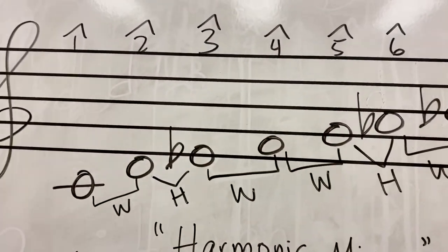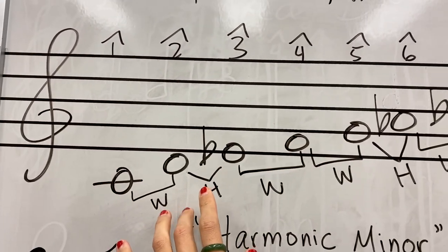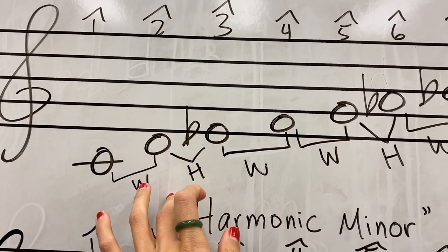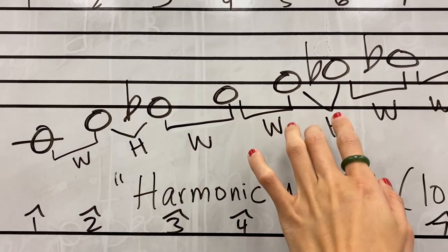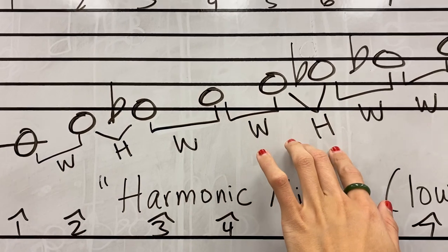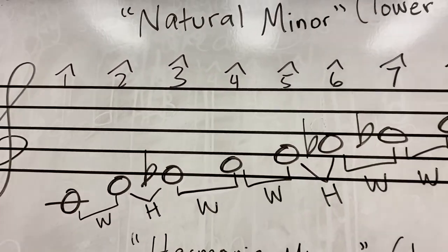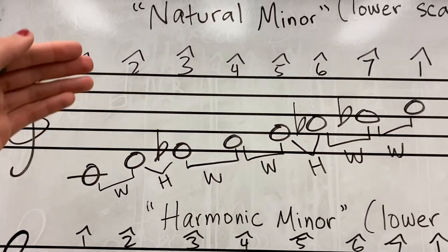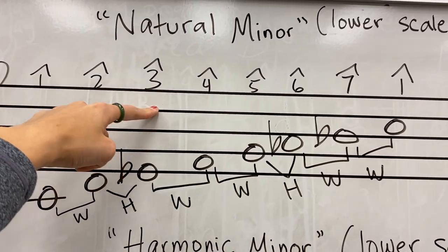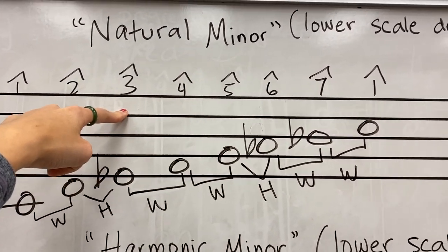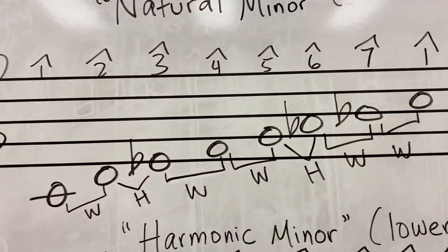If you look at the scale: C to D is a whole step, D to E-flat is a half step, E-flat to F is a whole step, F to G is a whole step, G to A-flat is a half step, A-flat to B-flat is a whole step, and B-flat to C is a whole step. You can see that scale degree 3 is lowered, scale degree 6 is lowered, and scale degree 7 is lowered.